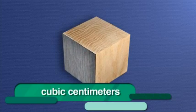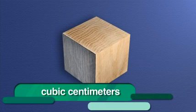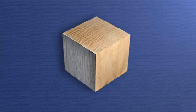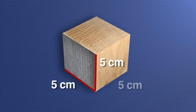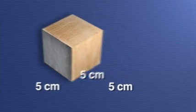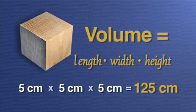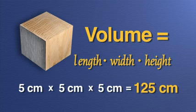Solids are usually measured in cubic centimeters. To find the volume of a solid object, like this block of wood, all you have to do is multiply the measurement of length, which is 5 centimeters, by height, 5 centimeters, by width, 5 centimeters, for a total of 125 cubic centimeters.